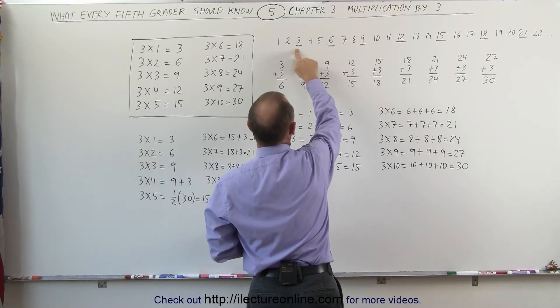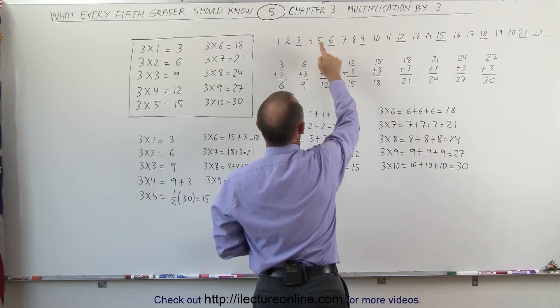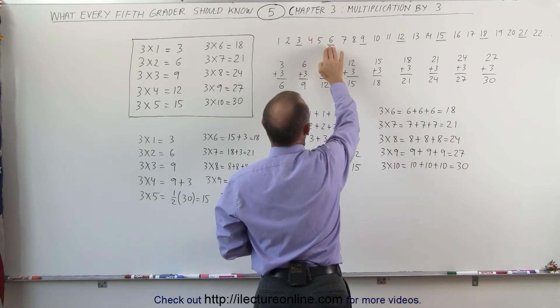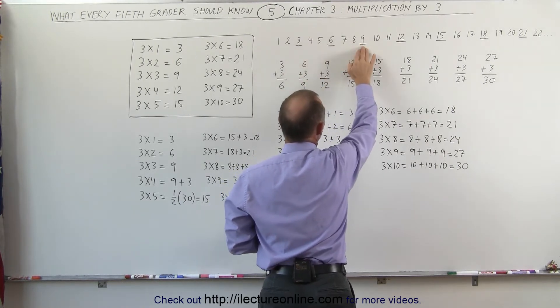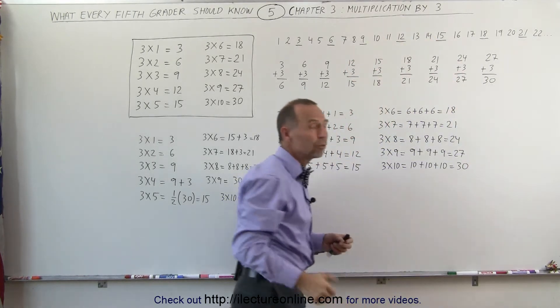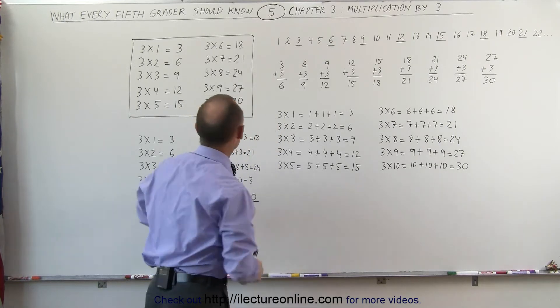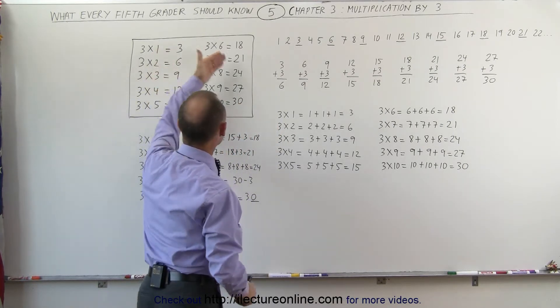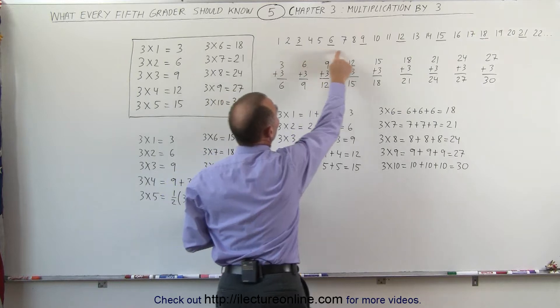Here we have 3 times 1 is 3, 3 times 2 is 6, 3 times 3 is 9, 3 times 4 is 12, 3 times 5 is 15, and so forth. We simply grab every third number. The multiplication table answer simply represents every third number in the set.